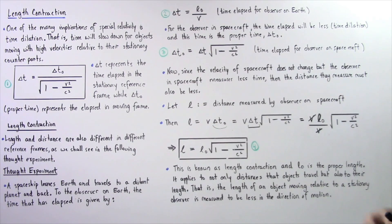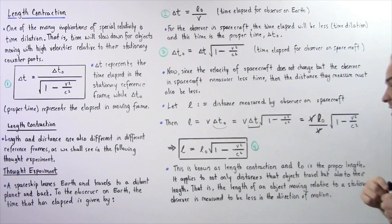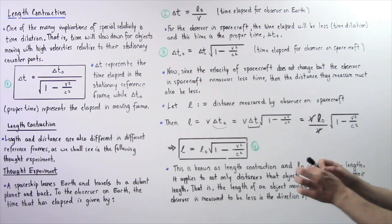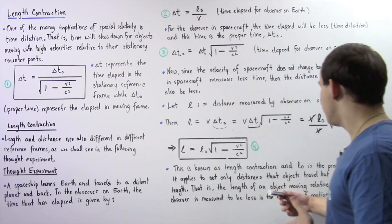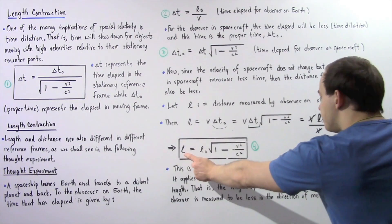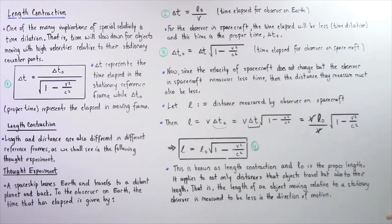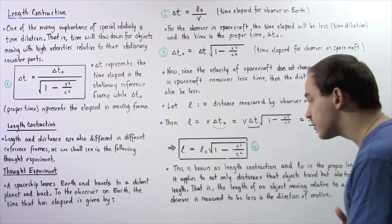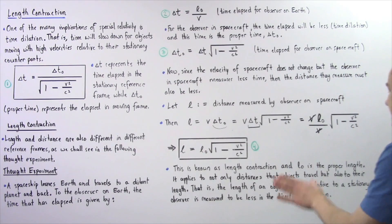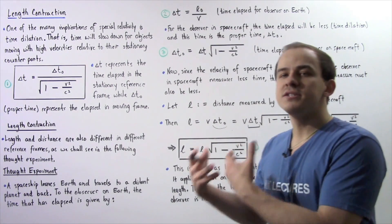This equation applies not only to the distances traveled by the spacecraft, but also to the length of the spacecraft itself. The length of an object moving with very high velocity will be measured as less relative to its stationary counterpart, and the direction of this decrease is in the same direction as the motion of the object. In other words, the length of an object moving relative to a stationary observer is measured to be less in the direction of motion compared to the stationary object.